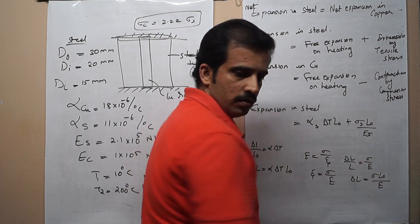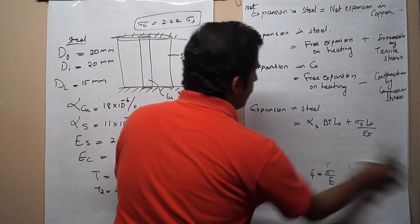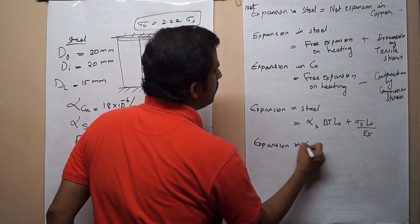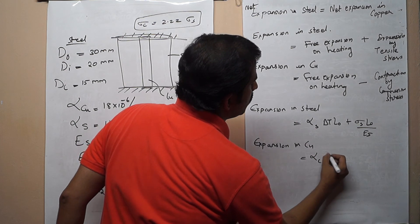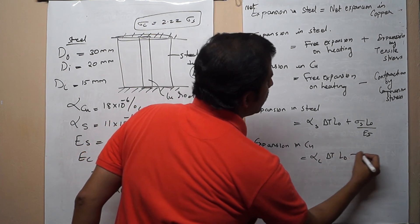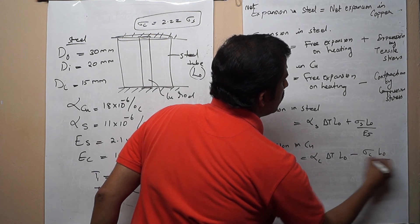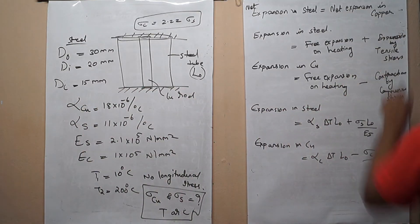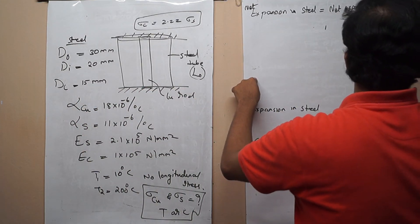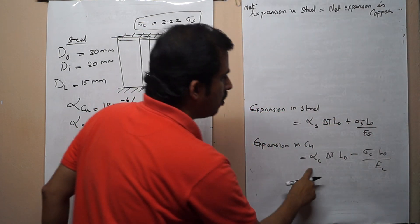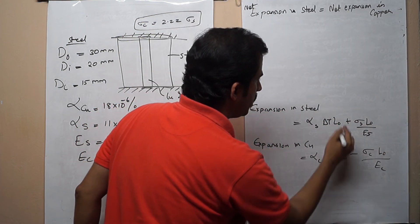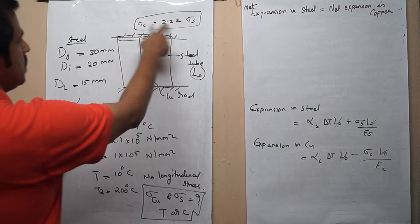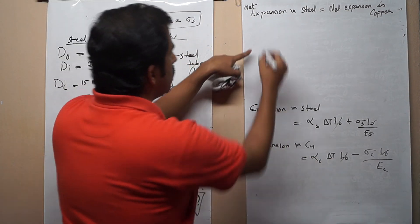Similarly, net expansion in copper equals α_copper × ΔT × L₀ minus σ_copper × L₀ / E_copper. Now equating the two expressions, we find that L₀ appears in every term — so we cancel L₀ throughout. We also substitute σ_c = 2.22 σ_s from our first inference.